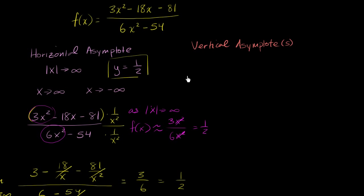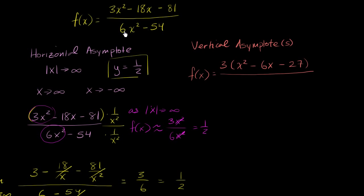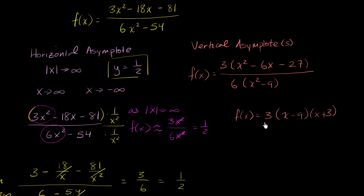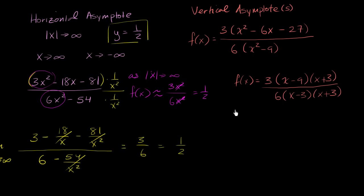Let's factor the numerator and denominator. The numerator has every term divisible by 3, so it factors as 3 times (x squared minus 6x minus 27). The denominator has every term divisible by 6, giving 6 times (x squared minus 9). Factoring further: the numerator becomes 3(x minus 9)(x plus 3), and the denominator — a difference of squares — becomes 6(x minus 3)(x plus 3). The denominator equals 0 when x equals positive 3 or x equals negative 3.